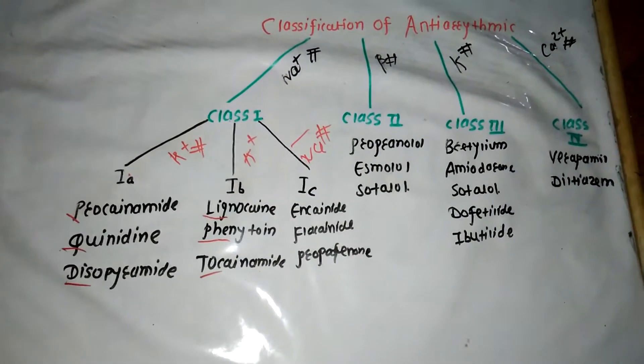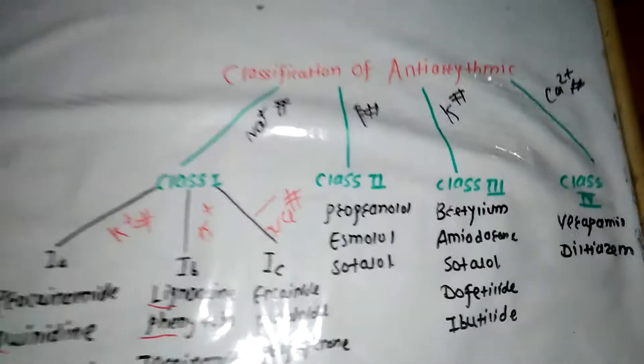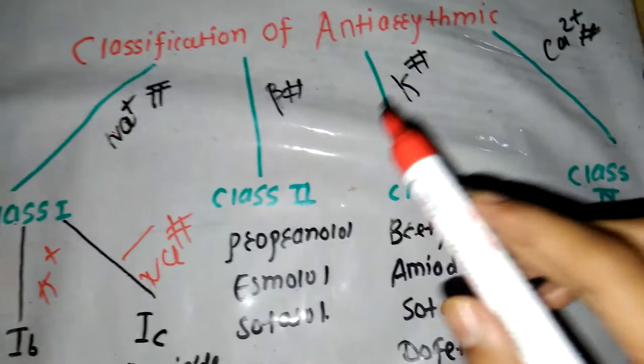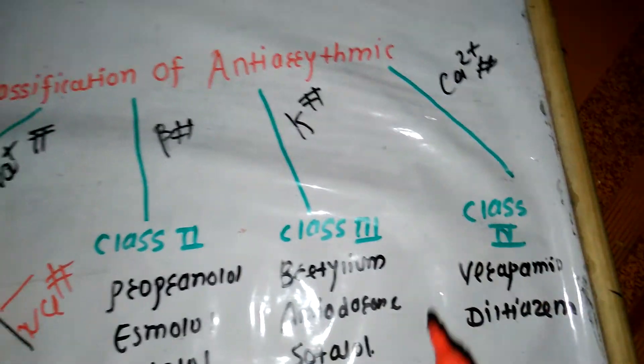Anti-arrhythmic drugs are divided into 4 types. Class 1 is sodium channel blocker, Class 2 is beta blocker, Class 3 is potassium channel blocker, Class 4 is calcium channel blocker.